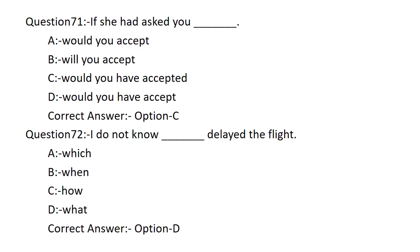I do not know dash delayed the flight. Option A: WHICH. Option B: WHEN. Option C: HOW. Option D: WHAT. The answer is Option D — WHAT. I do not know WHAT delayed the flight.